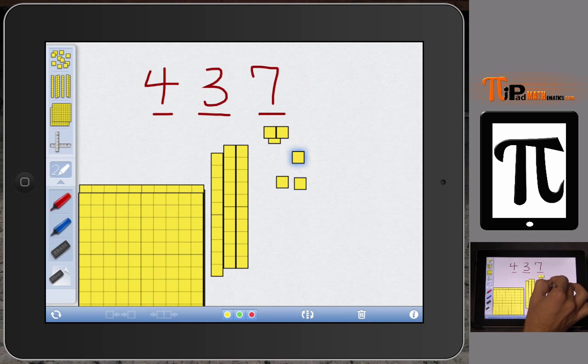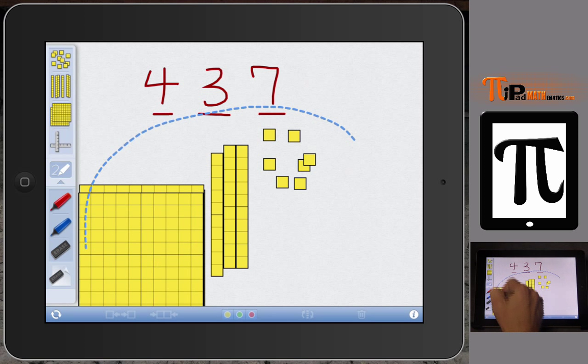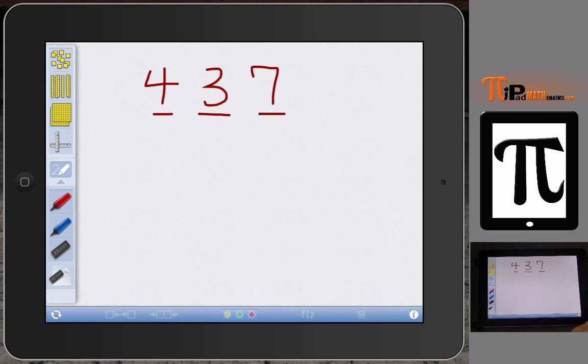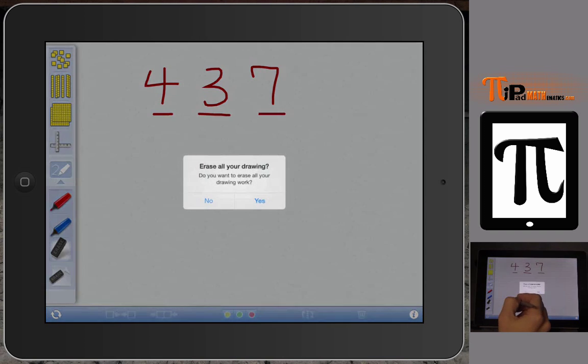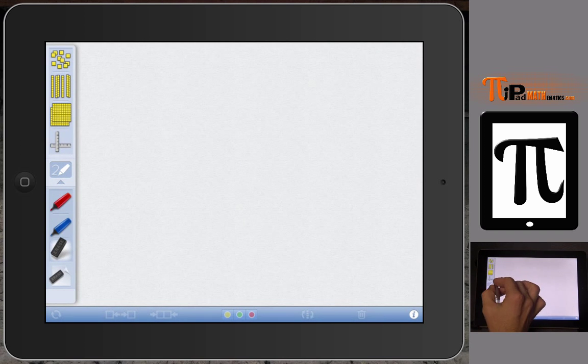So we have our four hundreds, our three tens, and then our seven ones. And so this helps us model the number four hundred and thirty seven. Well I'm going to circle them all up, I'm going to trash them and I'm going to erase it all.